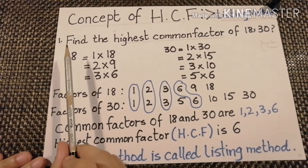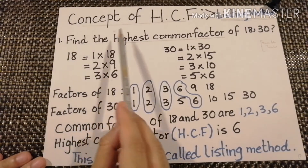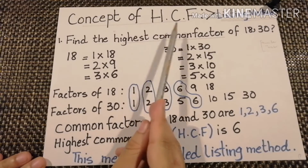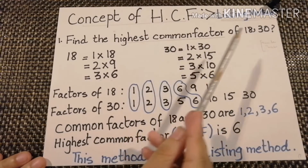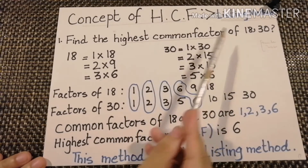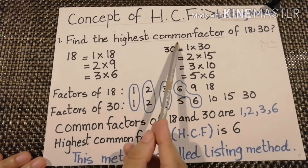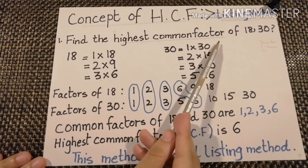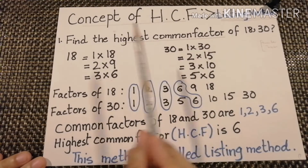Today our topic is the concept of HCF — highest common factor — by listing method. Find the highest common factor of 18 and 30.